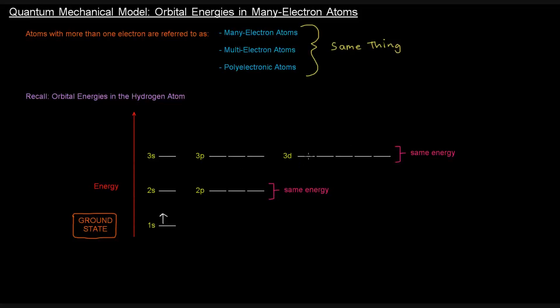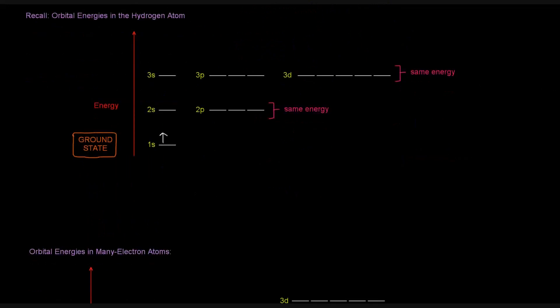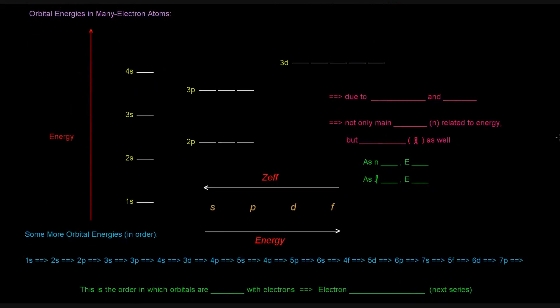But this situation is entirely different in atoms that have more than just one electron. The orbital energies in many electron atoms are kind of like this. We have the 1s orbital down here. The 2s orbital is higher in energy. The 2p orbital is higher than that in energy. Then there's the 3s orbital, then the 3p orbital, then the 4s orbital, and then the 3d orbital that's a little bit higher in energy than the 4s orbital. So what's going on here?